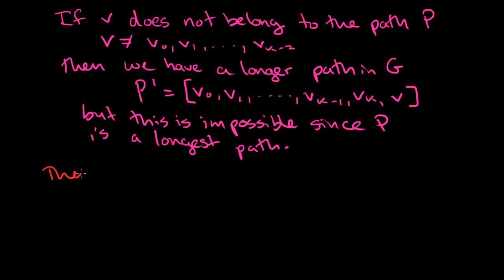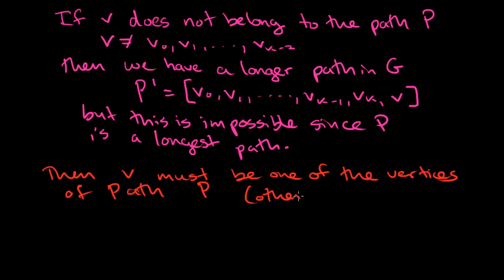It's not Vk minus 1. It's got to be some other vertex, but it must belong to the path. So then V must be one of the vertices of path P, but of course, other than Vk minus 1.